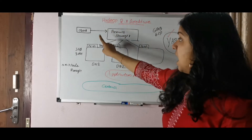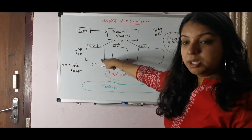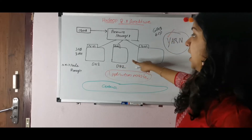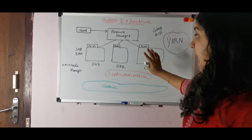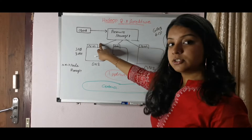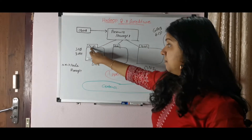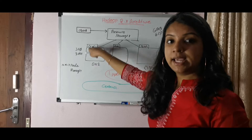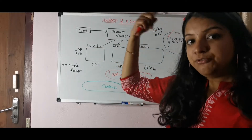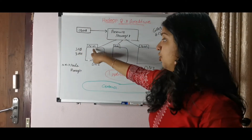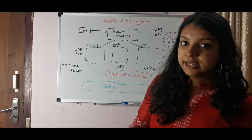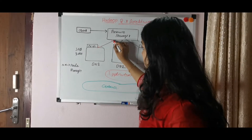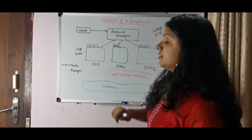The Resource Manager allocates resources to Data Node 1, Data Node 2, and Data Node 3. We also replace the Task Tracker with the Node Manager. There is direct communication between the Node Manager and the Resource Manager.